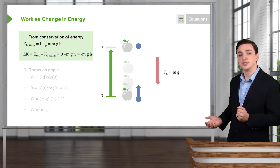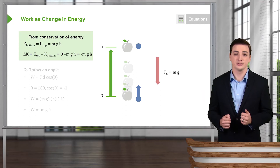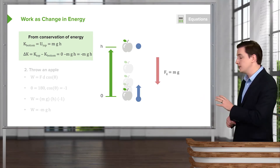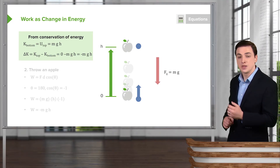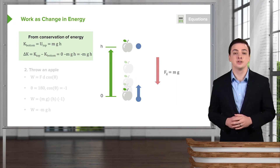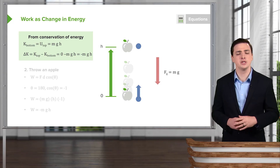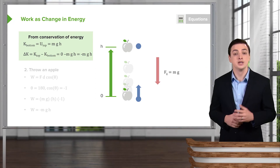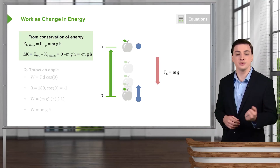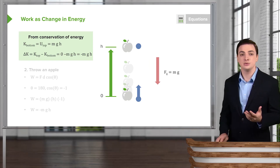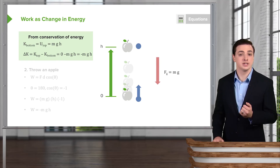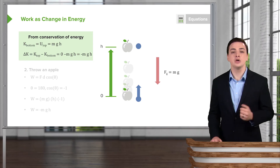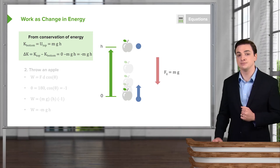In this case, maybe I throw the object upwards. If the object is moving upwards while gravity is pulling downwards, we have a different situation. First, let's analyze from conservation of energy. Initially the kinetic energy is one-half mv squared — a non-zero value. Finally, the object has only potential energy and no kinetic energy. From conservation of energy these are equivalent, so the initial kinetic energy equals the final potential energy mgh. The change in kinetic energy is therefore zero minus mgh, meaning the object lost mgh worth of kinetic energy.